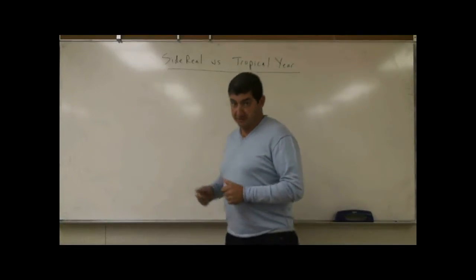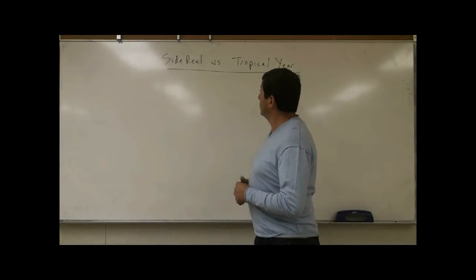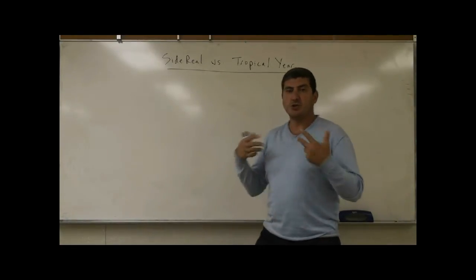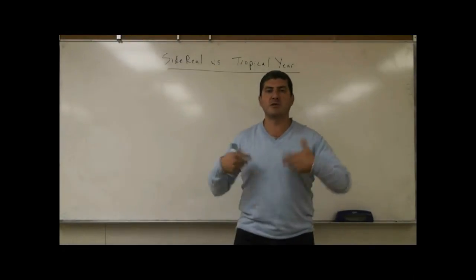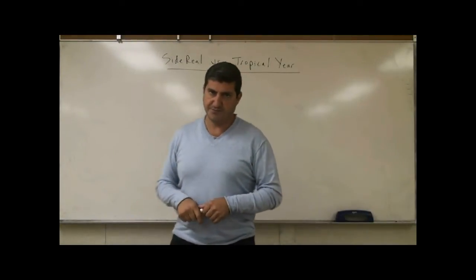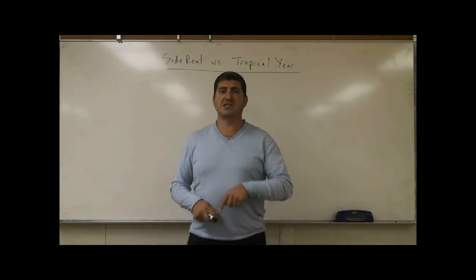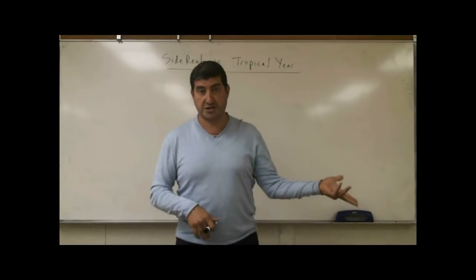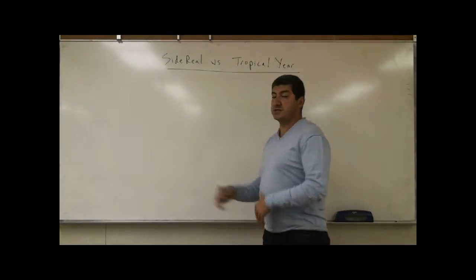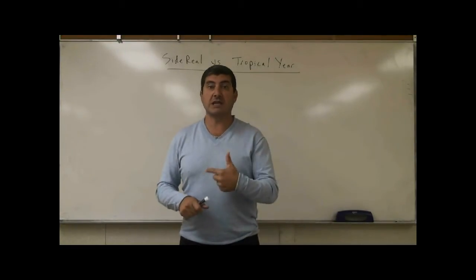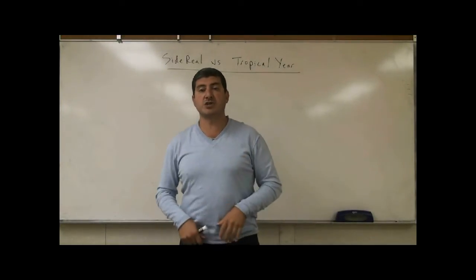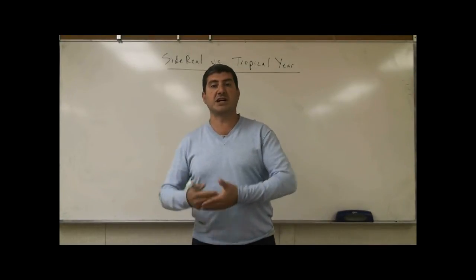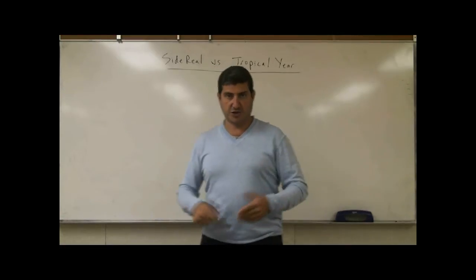We're going to discuss the difference between the sidereal year and the tropical year. The sidereal year is the number of days it takes for the Earth to go around and come back to the same point with respect to the stars. The tropical year is the time for the Earth to come back to the same point with the same orientation to the sun — in other words, for the sun to reappear in the sky at the same point that it was when it first started.